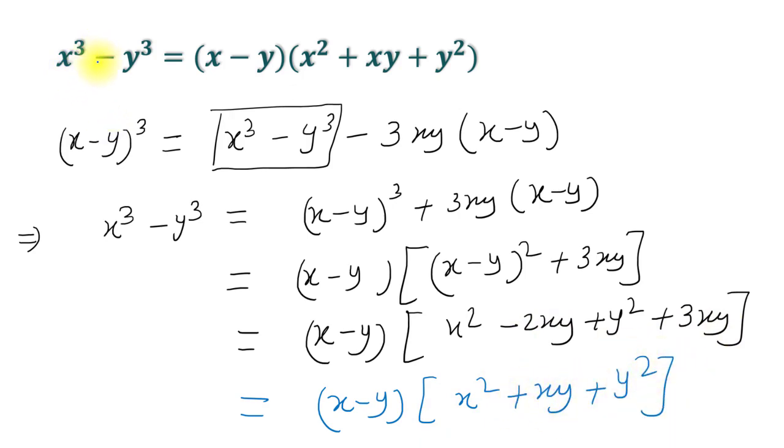So the factors of x³ - y³ are (x - y) and (x² + xy + y²).